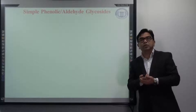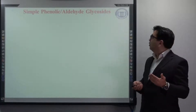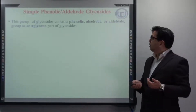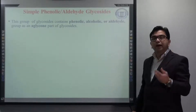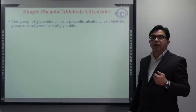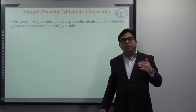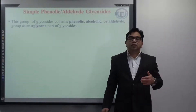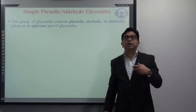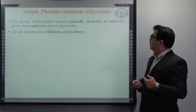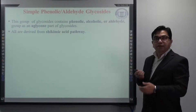First we will go through a basic understanding of what are simple phenolic, alcoholic, or aldehyde glycosides. As the name indicates, this group of glycosides contains either a phenolic, alcoholic, or aldehyde functional group in their aglycon part. When a phenolic aglycon gets attached or conjugated with a sugar, it becomes a phenolic glycoside. Similarly, when an aldehyde-containing aglycon part gets attached to the sugar molecule, it becomes an aldehyde glycoside. Most importantly, all of them are derived from the shikimic acid pathway.